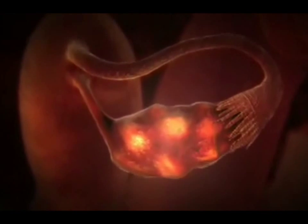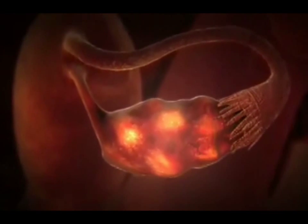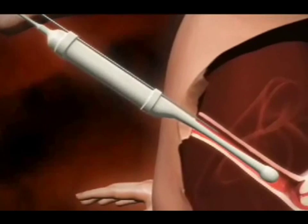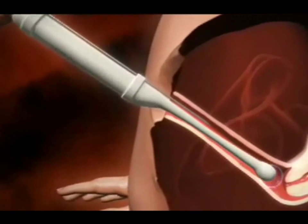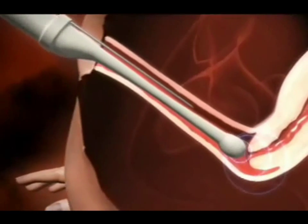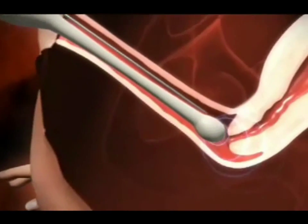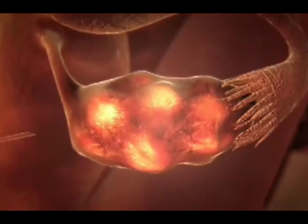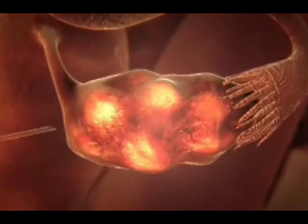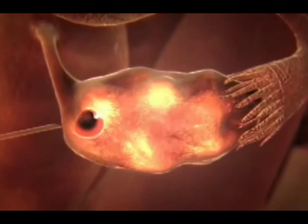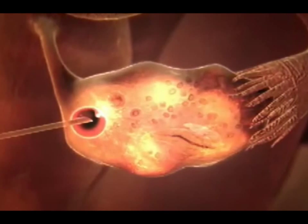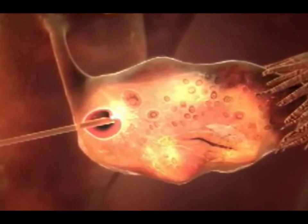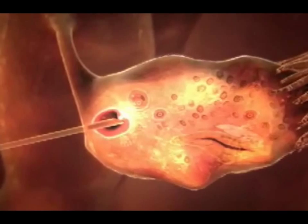In natural conception, many millions of sperm cells in each ejaculation are necessary for fertilization. In ICSI, just one may be enough. Women having ICSI are given special reproductive hormones to encourage several eggs to develop in the ovaries. The eggs are then removed from the ovary in a short outpatient procedure.